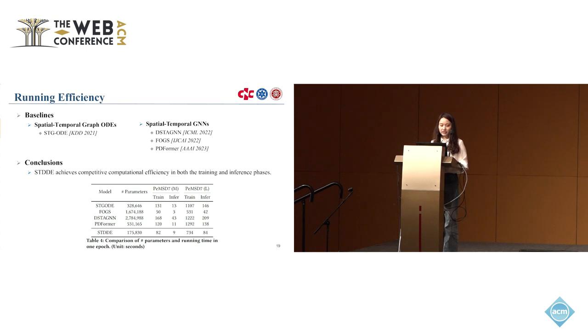Next, we also conducted running efficiency experiments. We compared with two kinds of baselines: spatial-temporal graph ODEs and spatial-temporal graph neural networks. This table shows the number of parameters and the training and inference time during one epoch. We can conclude that our model achieves competitive computational efficiency in both training and inference phases.